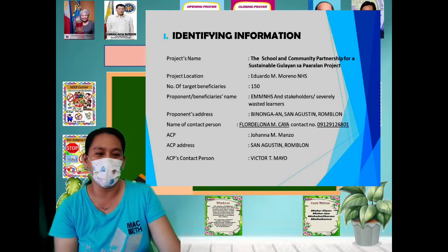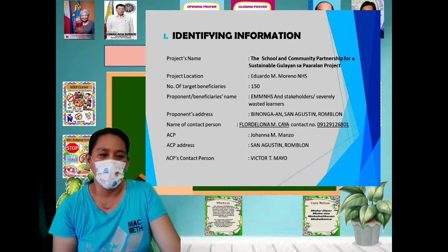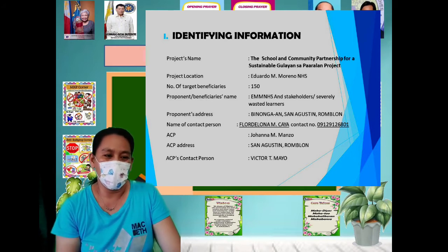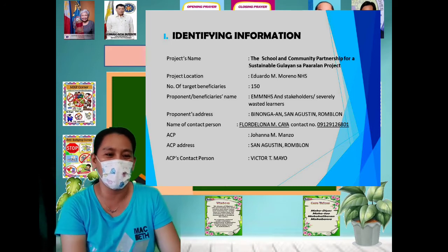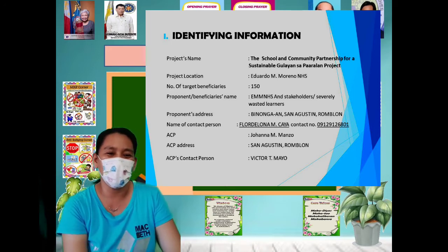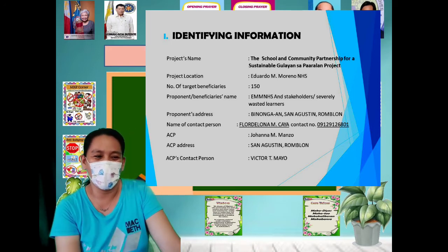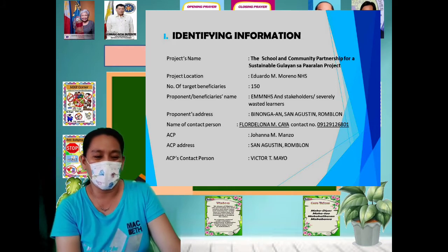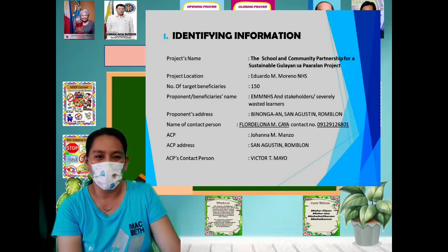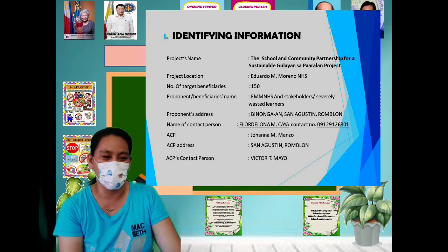The name of the contact person is Floreluna M. Kaya with contact number 39129126801. The ACP is myself, with ACP address San Agustino, Romblon, and a corresponding contact number.